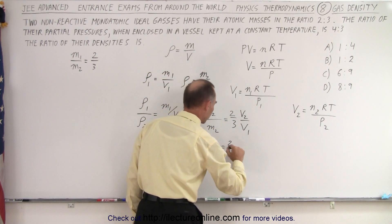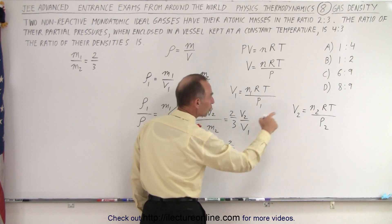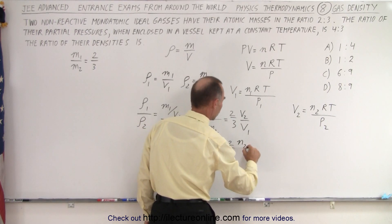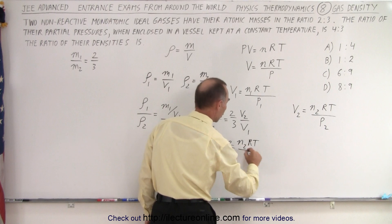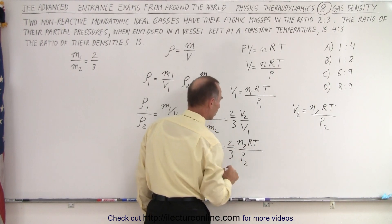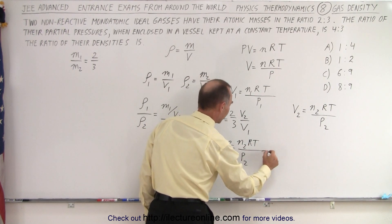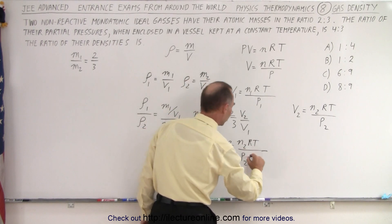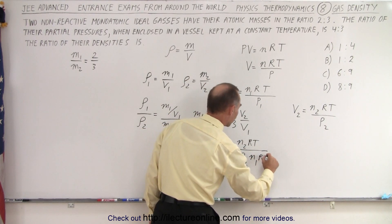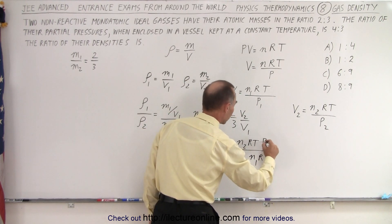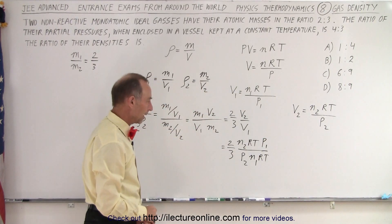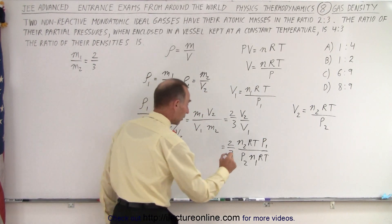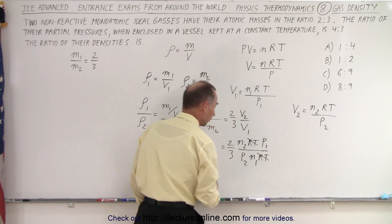All right, so this is equal to 2 thirds, v2 is going to be n2 RT over P2, times or divided by V1, which is n1 RT. And then the P1 goes to the numerator. All right, so now we can cancel out the R and the T. They're both constant.